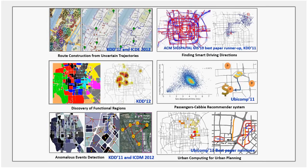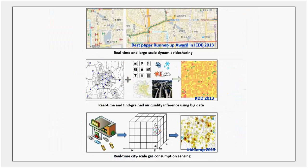Using these datasets, we have produced a series of technical work — from finding practically the fastest paths based on large-scale taxi cab trajectories, to gleaning problematic design in a city's road network, and identifying functional regions in a city. Last year, we produced three new results about large-scale dynamic ride-sharing among taxi cabs, air quality, and real-time gas consumption sensing in a city. I'll give you three examples.